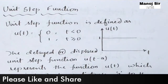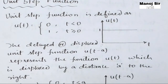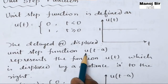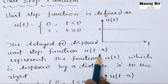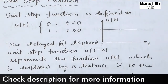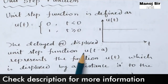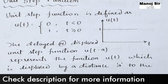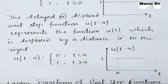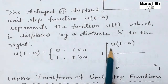Now coming to the delayed or displaced part, that is u(t - a). The delayed or displaced unit step function u(t - a) represents the function u(t) which is displaced or delayed by a distance of a to the right. On the x-axis you have t and on the y-axis you have u(t - a).